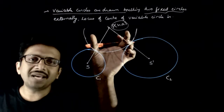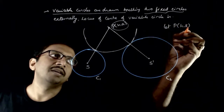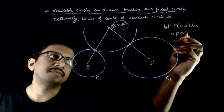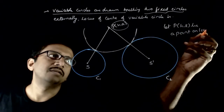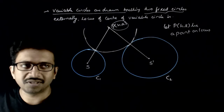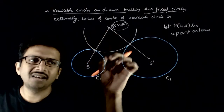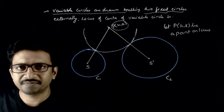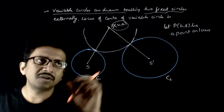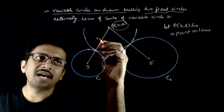Let (h, k) be a point on the locus. If (h, k) is a point on the locus, obviously this should be the center of a circle which touches these two circles. Let this be one arbitrary case. In this case, let the radius of the circle be r1.